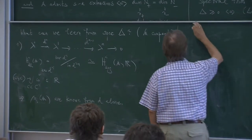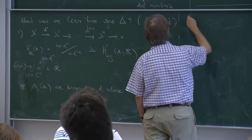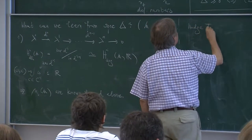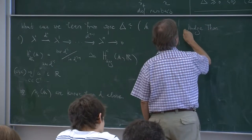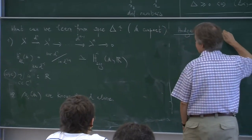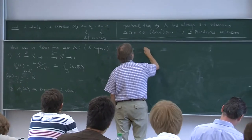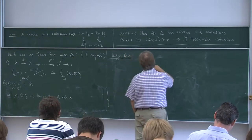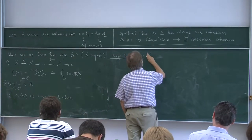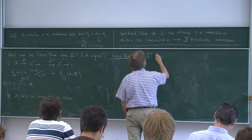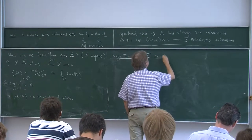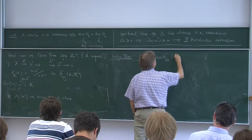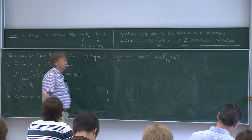The de Rham cohomology groups H^i_{dR} = ker(d_i)/im(d_{i-1}), and de Rham's theorem tells us these are isomorphic to the i-th singular cohomology group with real coefficients. The isomorphism is fairly obvious: take omega in ker(d_i) and integrate over a k-cycle c — the pairing (omega, c) ↦ ∫_c omega is a real number. The only difficulty is that in the singular theory the cycle is continuous, but here it must be smooth, requiring some approximation. The Betti numbers are thus known from D alone — that's a smooth invariant which doesn't need a metric, so no spectral theory yet.